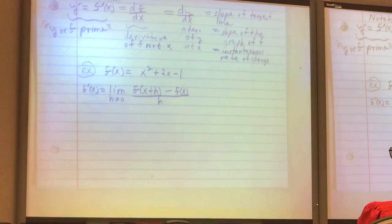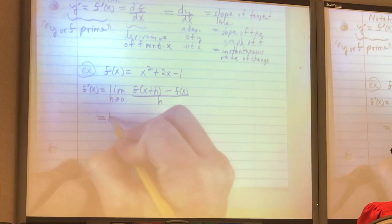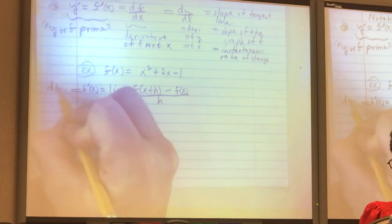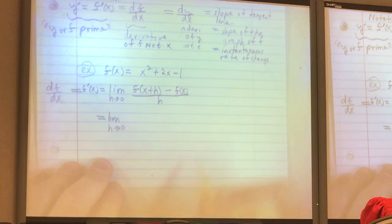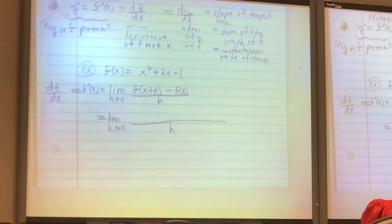And again, this could be written as df dx as well, or dy dx, whatever. I already gave you what the function is, so now you're going to plug in. I mean, when I say plug in, you're not going to plug in the zero, right? Because you would get zero over zero again. So you're going to plug in what this is, and what that is. Let's start with the easy one. What is minus f of x?